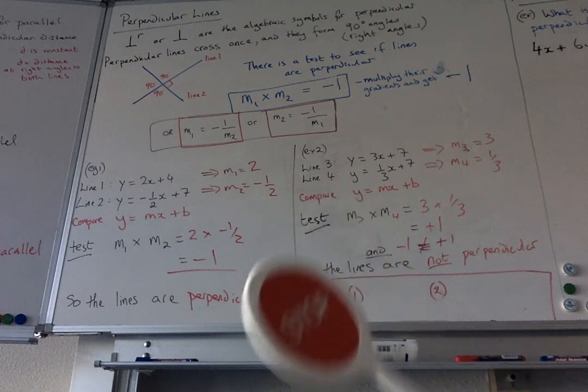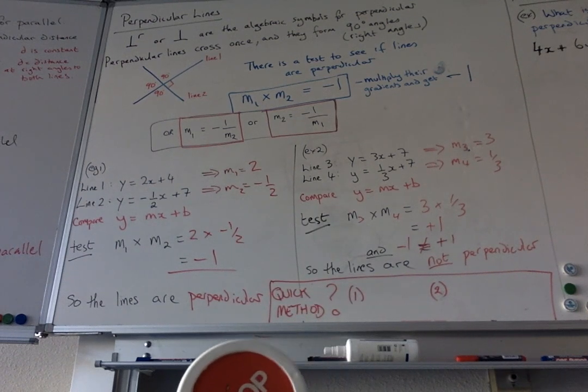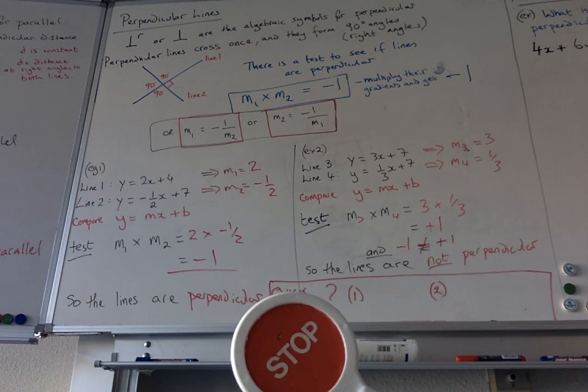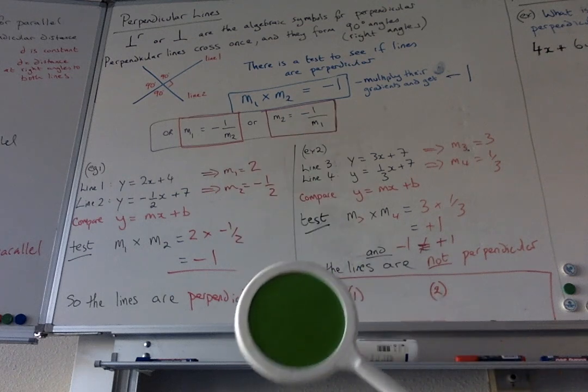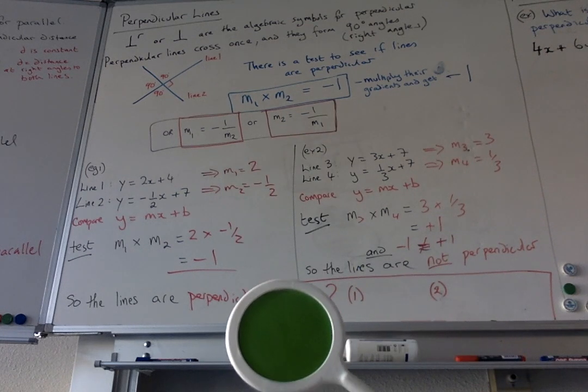Then you're starting to get the idea. Okay, let's see if you can do another one. What is perpendicular to 7? Stop the video and have a think. Perpendicular to 7. Okay, you're back to find out what is perpendicular to 7. It's minus 1 seventh.